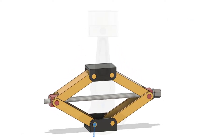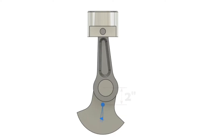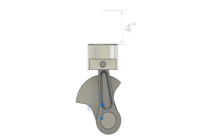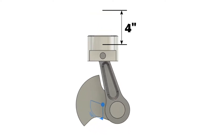Some linkages are pretty easy to understand. For instance, if we look at how a piston is attached to a crankshaft inside of an engine. Suppose the connecting rod attaches two inches away from the centre of the crankshaft. When the crankshaft makes one full rotation, the piston will travel four inches.